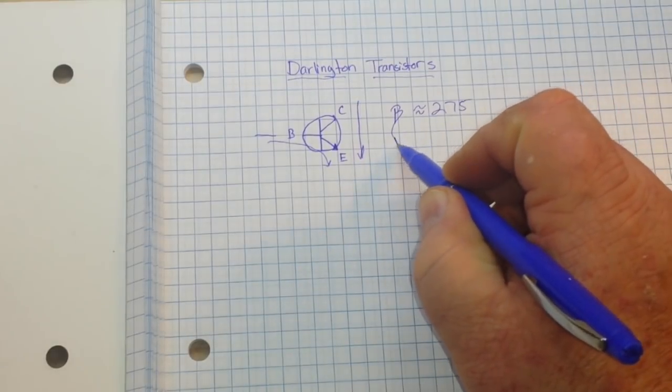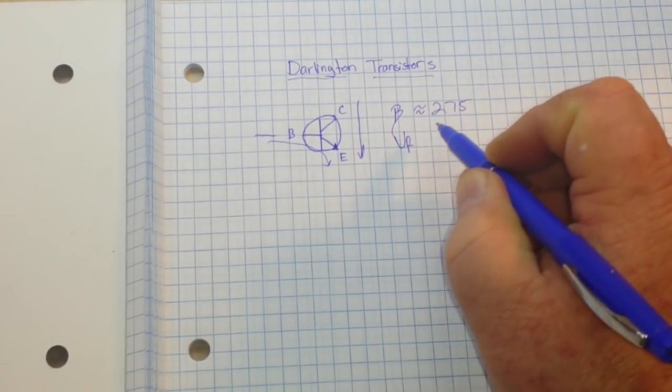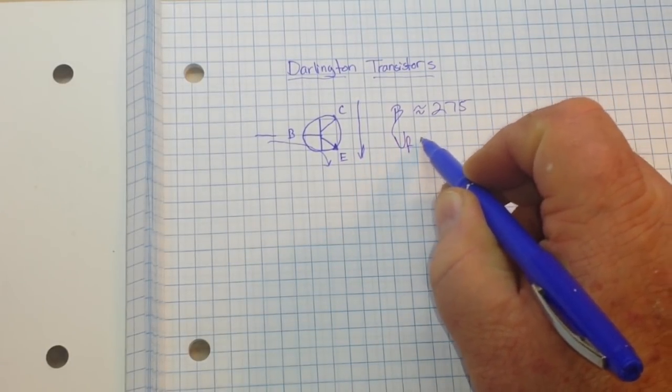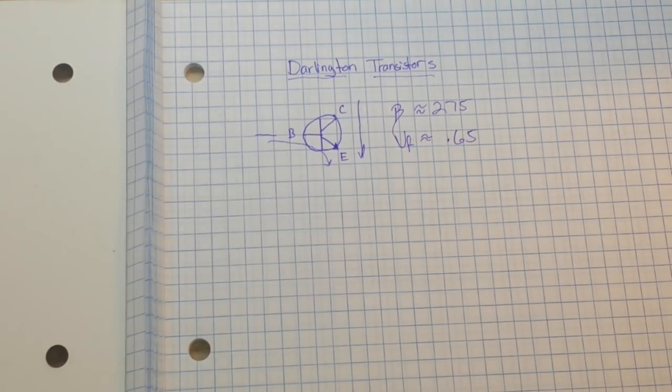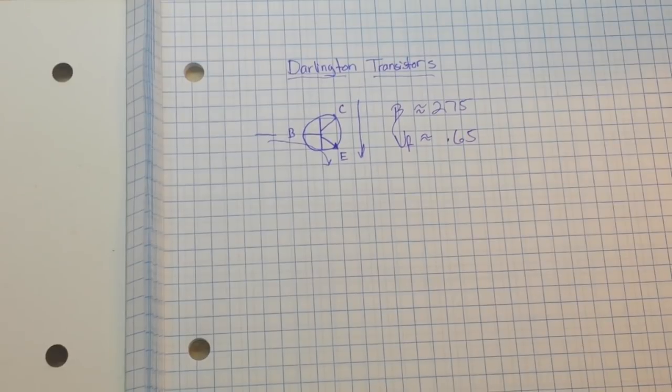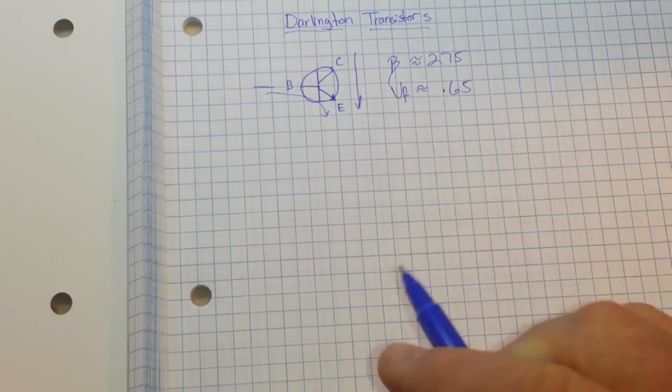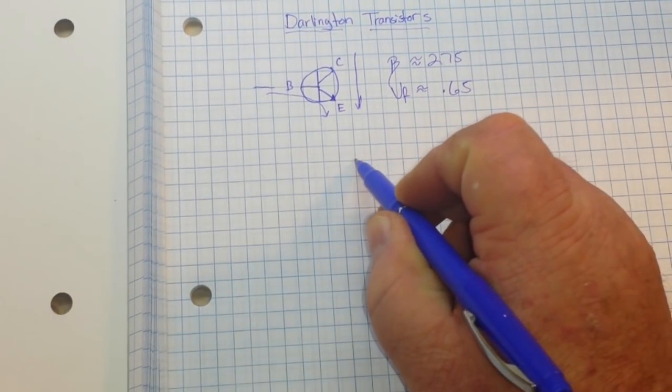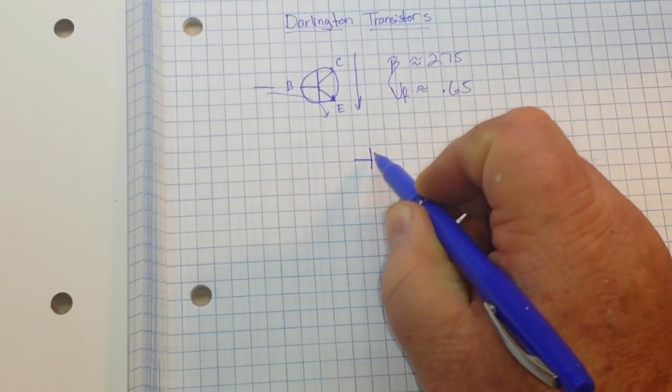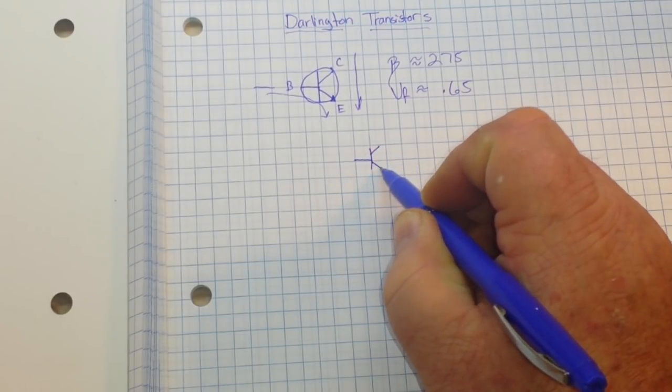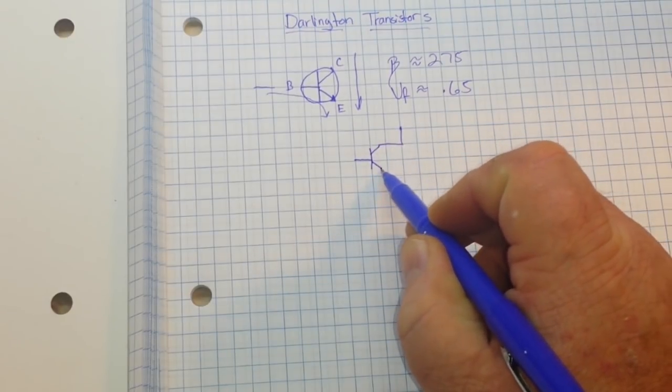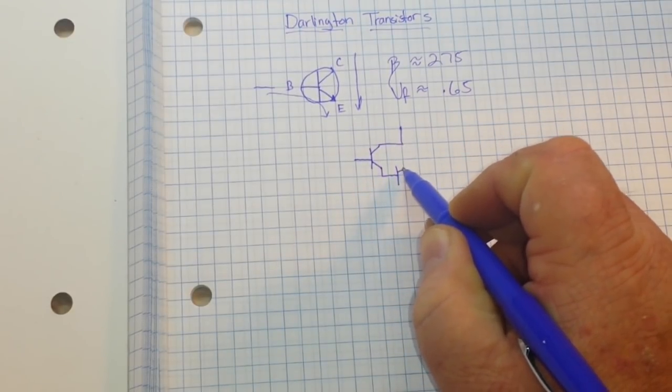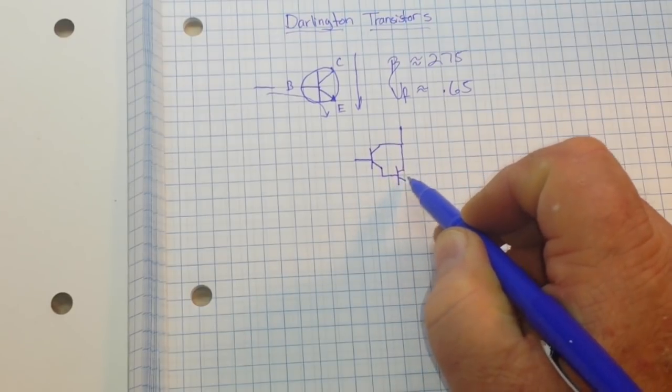And the forward voltage drop is about 0.65 volts. Now, our Darlington transistor basically just consists of two. We're talking about NPN here, but basically the same thing for PNP transistors, just backwards.